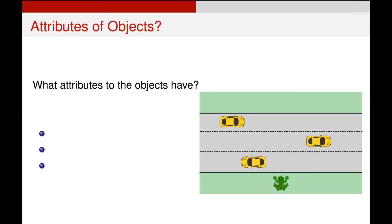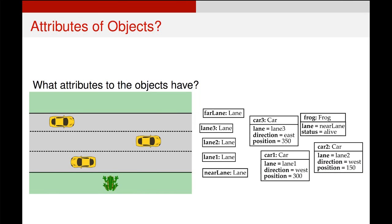The cars, for example, they should have the attribute what lane they're in. They might have a speed, they might have a direction, and they might have a position on the screen from left to right. What attributes do the lanes have? Well, we might want to give them numbers, but other than that, I can't see any clear attributes they would need for this particular implementation.